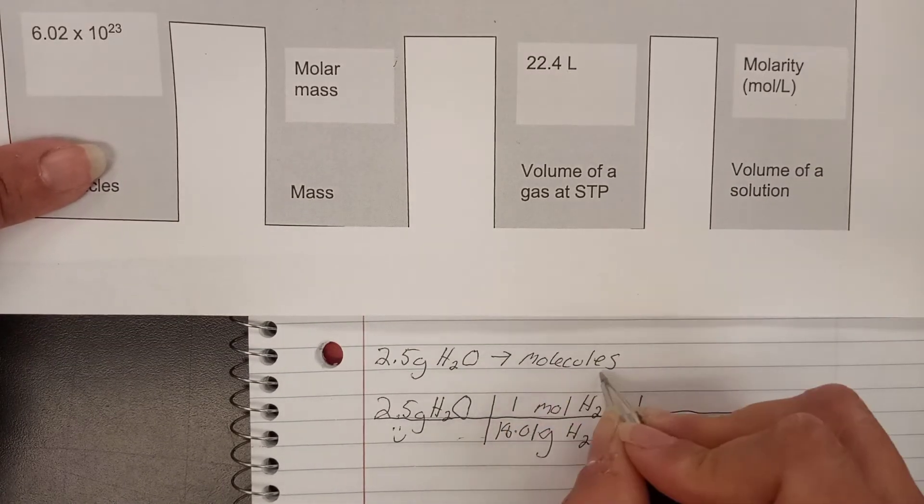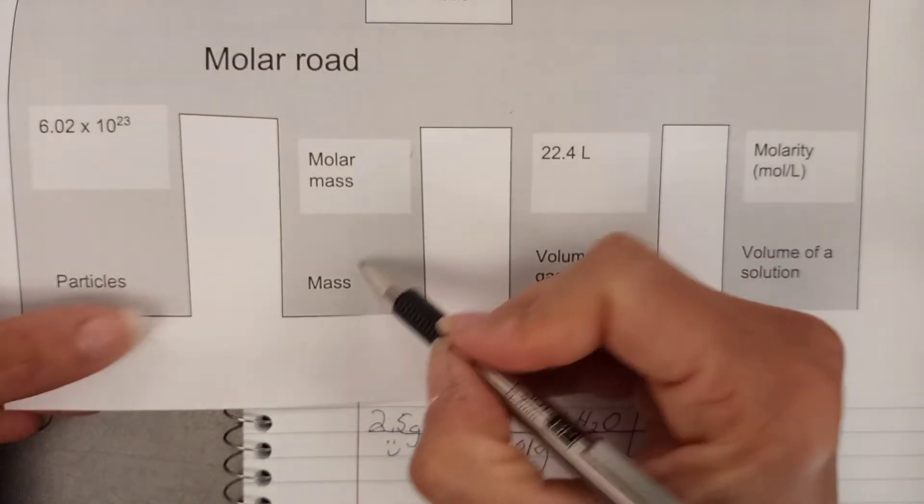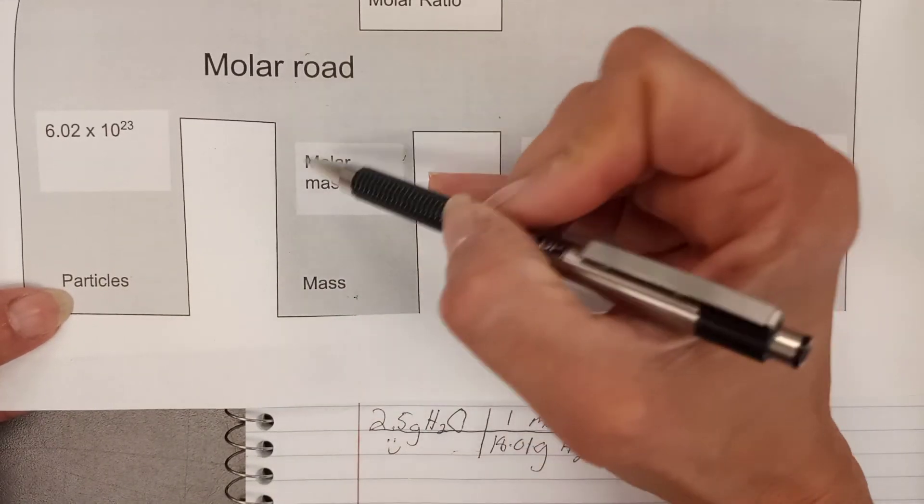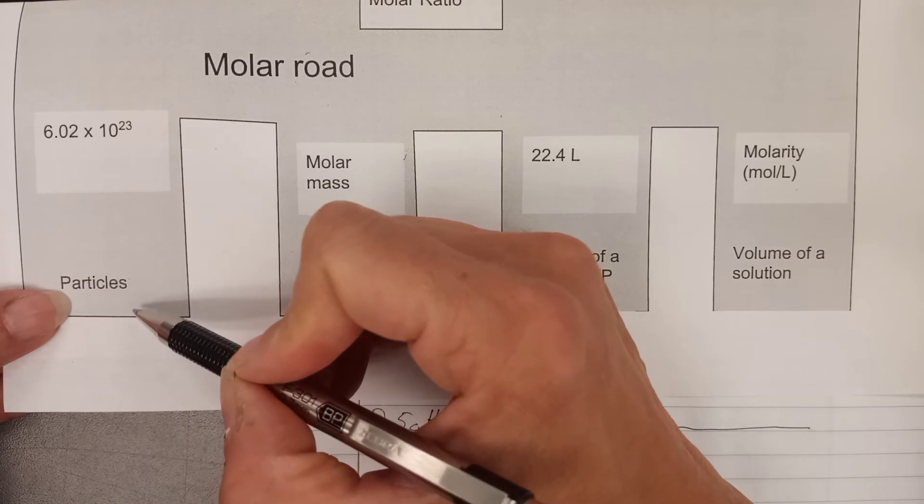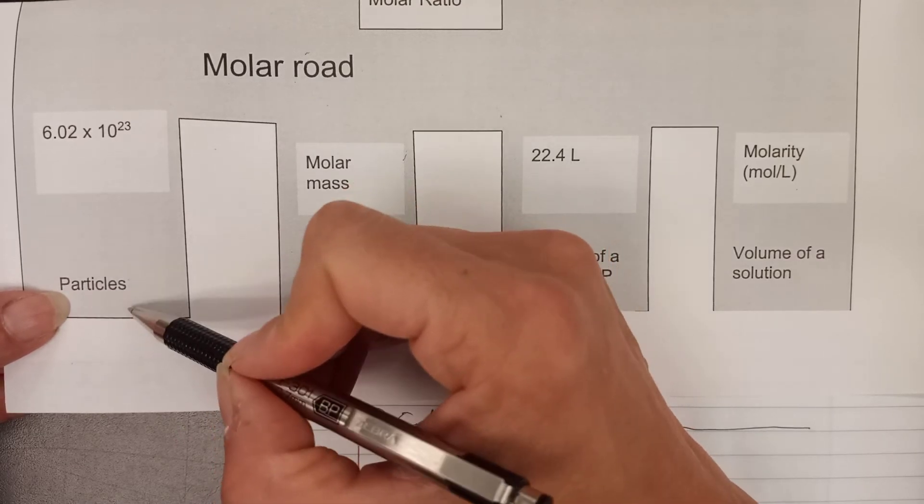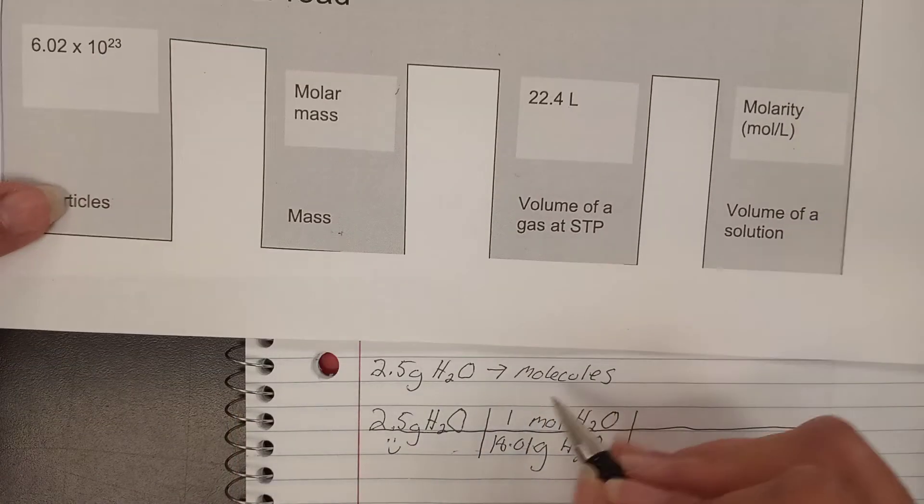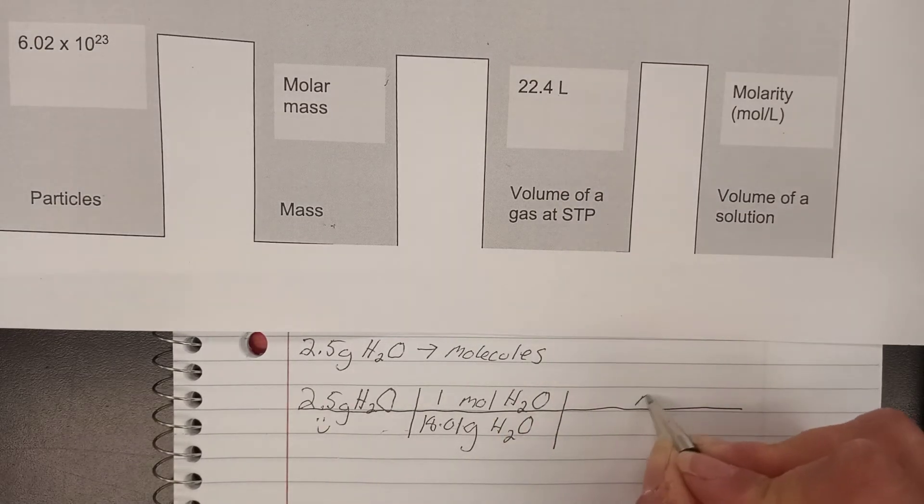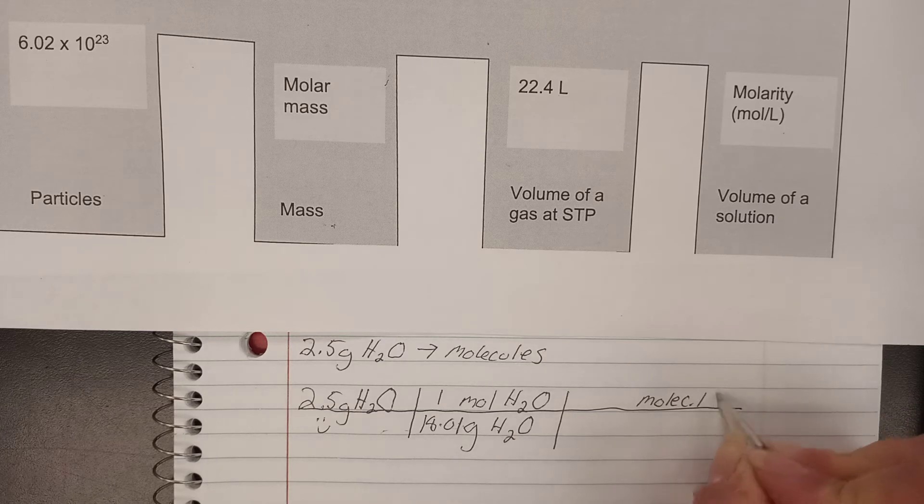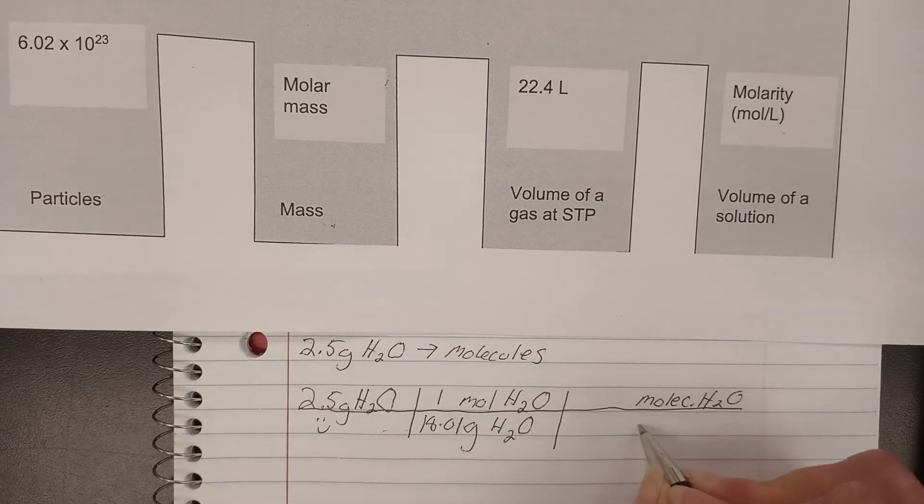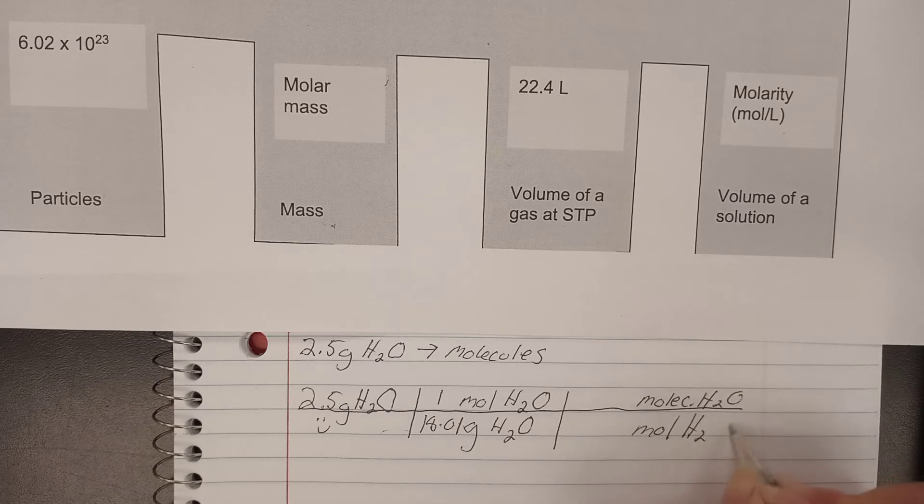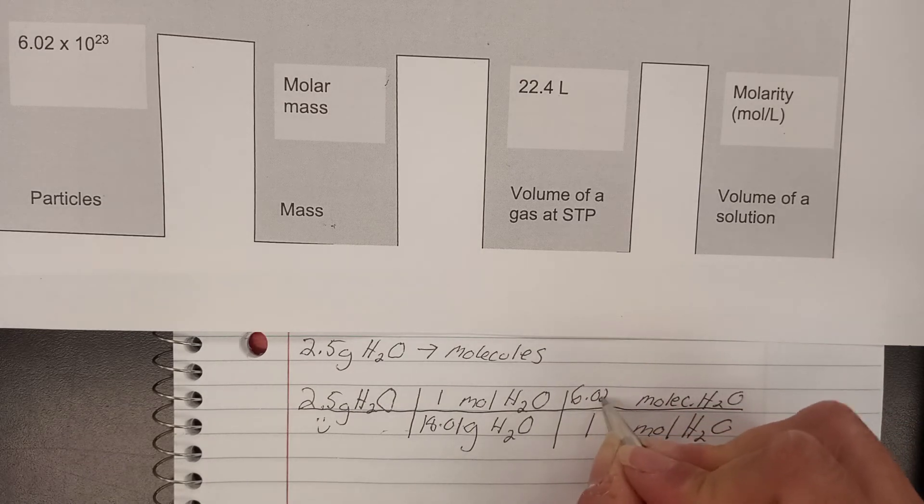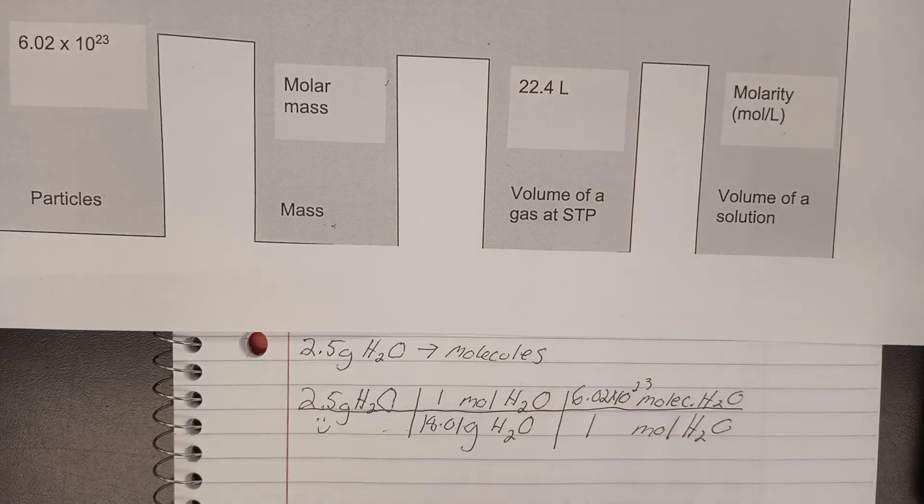But we're not there yet. I have moles, but I've been asked for molecules. Molecules and moles are not the same thing. Now I've gone from here to here, so now what am I going to do next? I'm going to go to particles from molar road. Particles is never a unit you'll use. Particles will either be formula units, molecules, or atoms depending on the substance that we're working with. I'm working with water. Water is a covalent substance, it comes in molecules. So I'm going to go to molecules of water from moles of water. Still one, 6.02 times 10 to the 23rd.